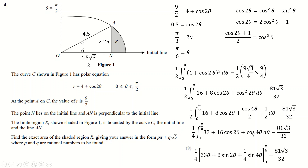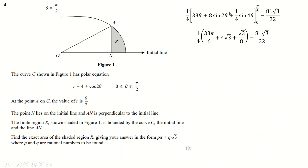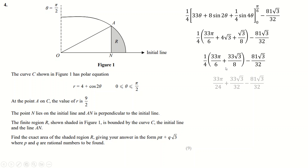Integrating and evaluating — when you put in 0 everything goes away since sin(0) is 0. When you put in π/6, sin(π/3) is root 3 over 2 times 8 gives 4 root 3, and sin(4π/6) equals sin(2π/3) is still root 3 over 2, giving root 3 over 8. Putting these together and subtracting the triangle area gives the final exact answer.